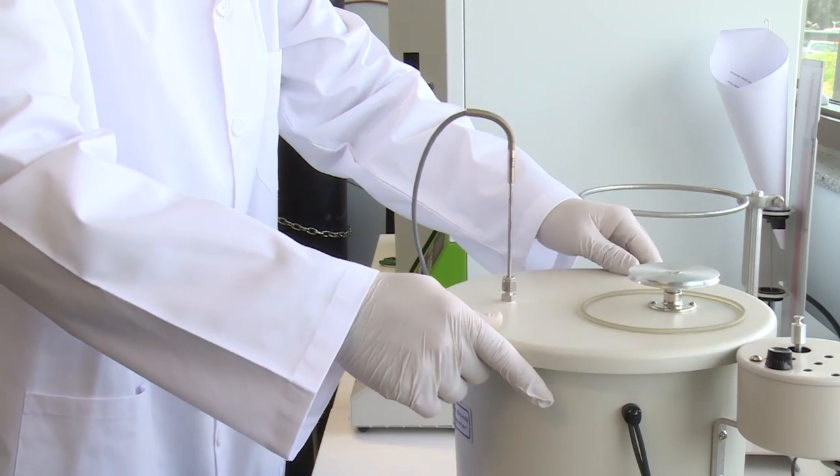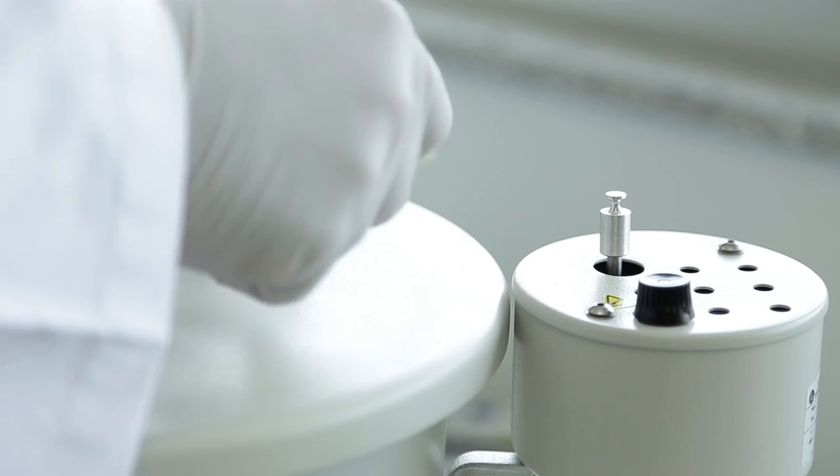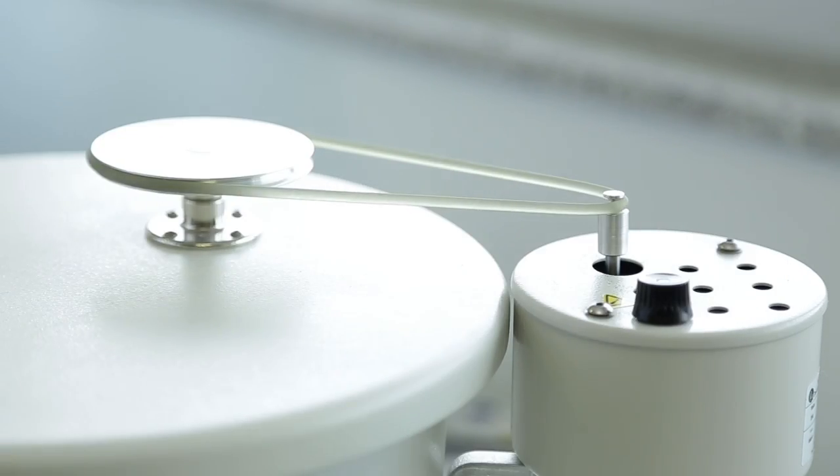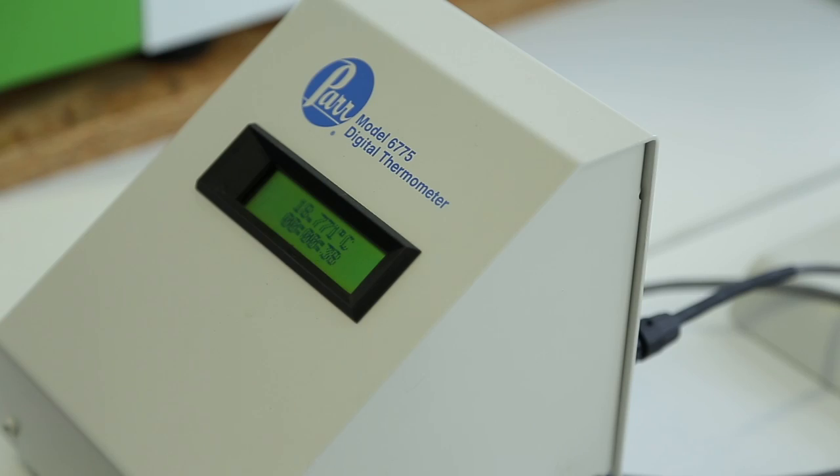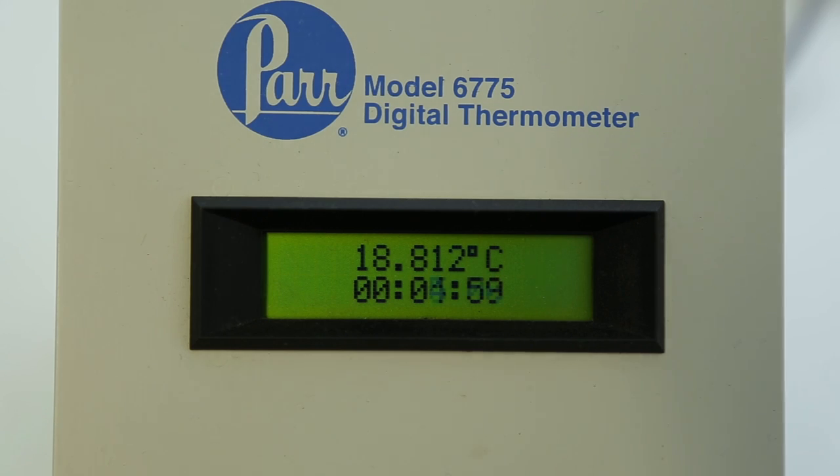Turn the stirrer by hand to be sure that it runs freely. Slip the drive belt onto the pulleys and start the motor. Turn on the digital thermometer. Let the stirrer run for 5 minutes to reach equilibrium before starting a measured run.